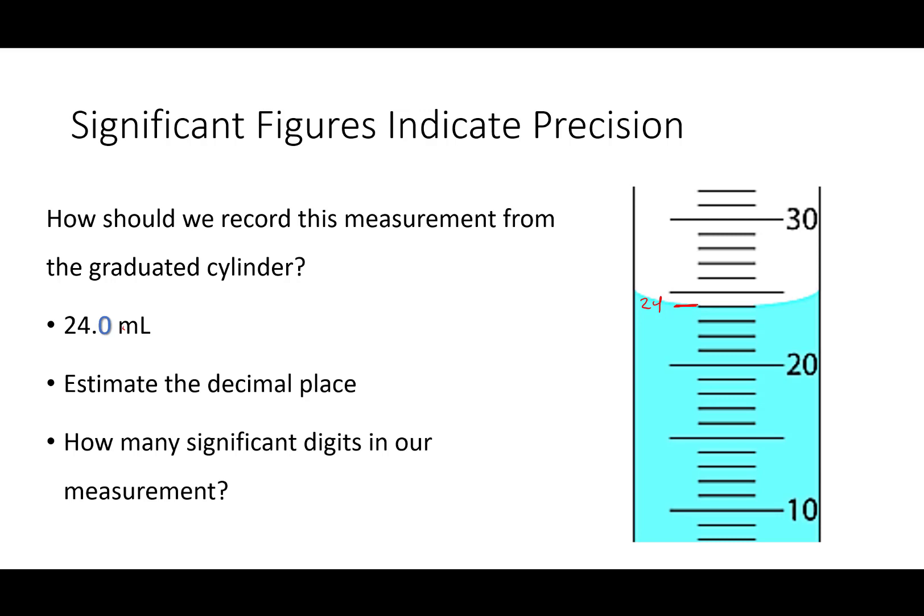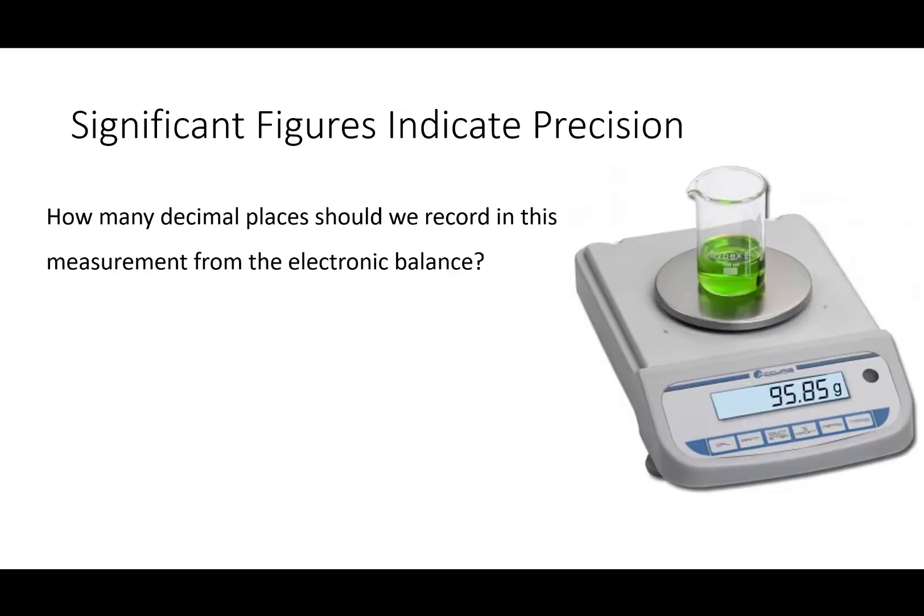How many sig figs do we have in our measurement? We have three significant digits. We are precise to the tenth of a millimeter in our measurement. Three sig figs.